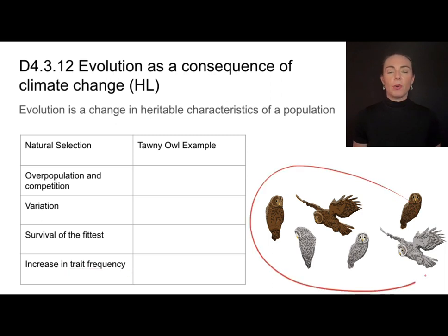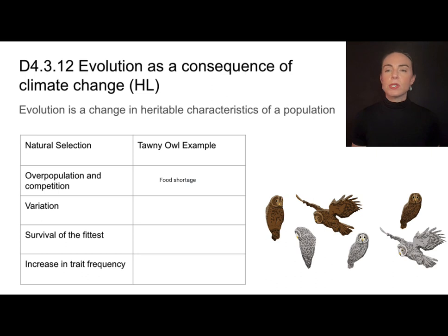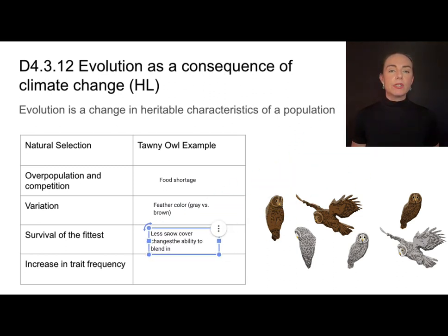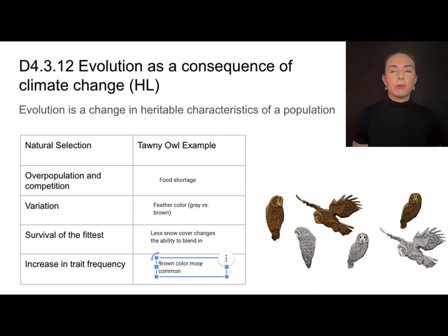The tawny owl is one organism being impacted by climate change. Overpopulation and competition are always factors, and there is a natural variation in feather color — gray versus brown — that existed before climate change. However, with warmer temperatures and less snow cover, the ability to blend in has changed for the gray owl. It is no longer advantageous to be gray when there is no snow to blend in with. As a result, the brown owl will survive, reproduce, and pass along its genes more often, leading to an increase in brown coloration.